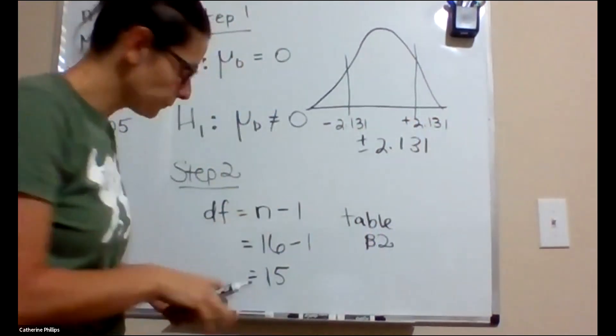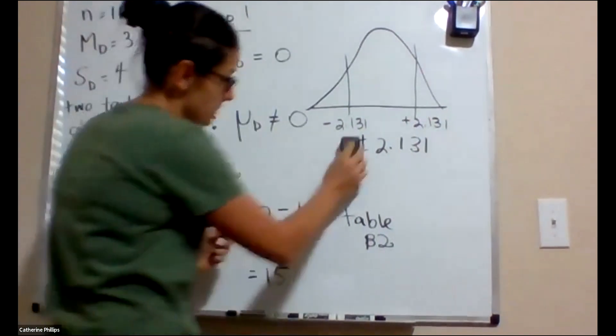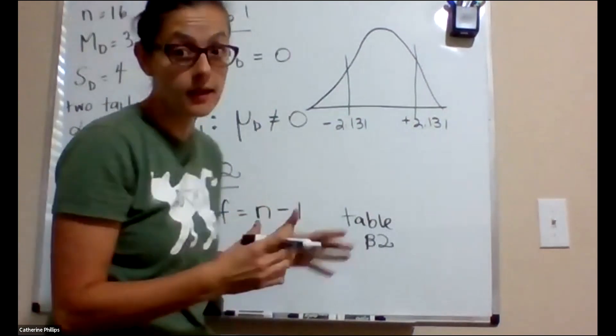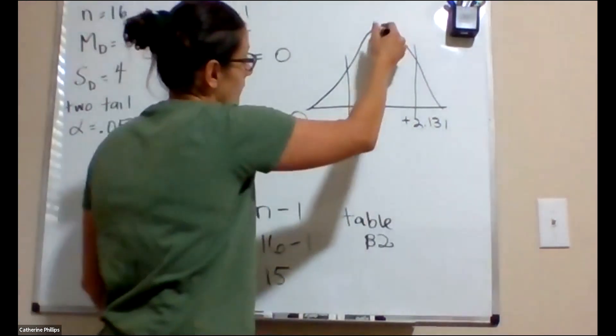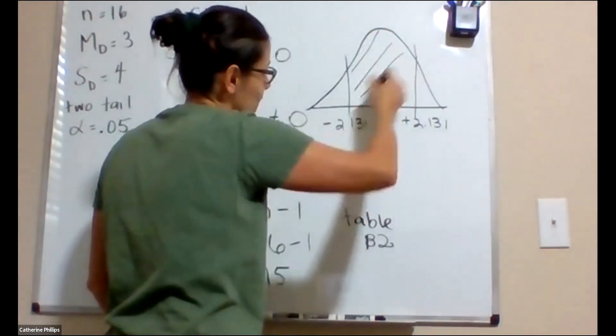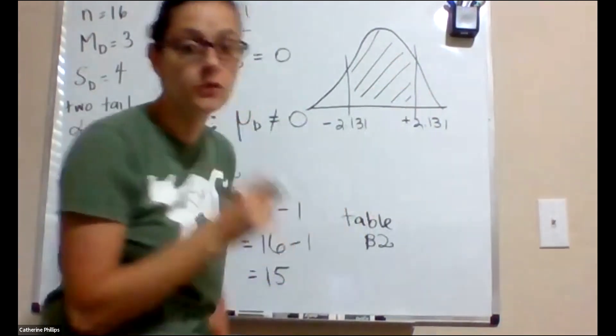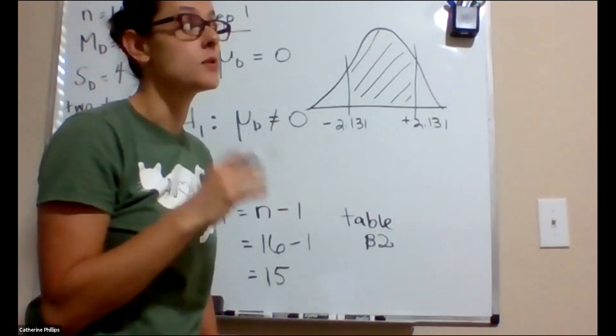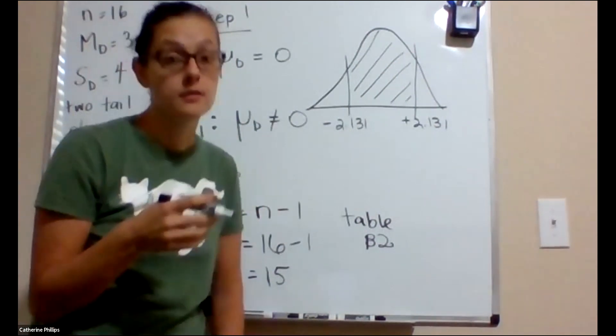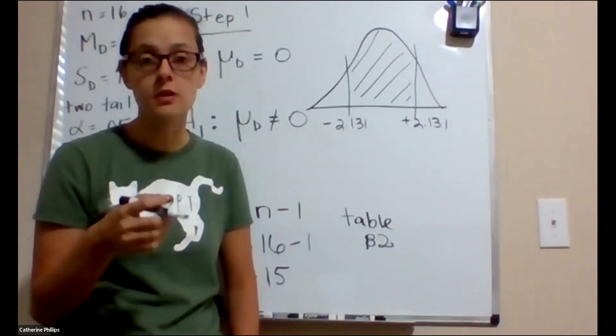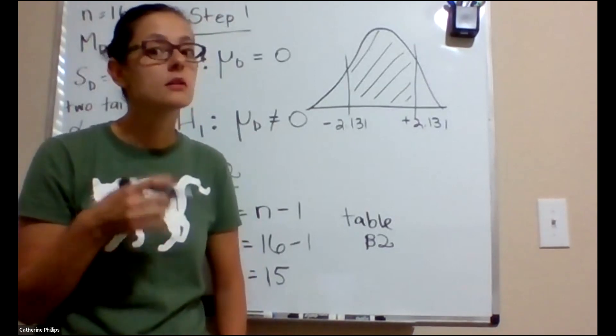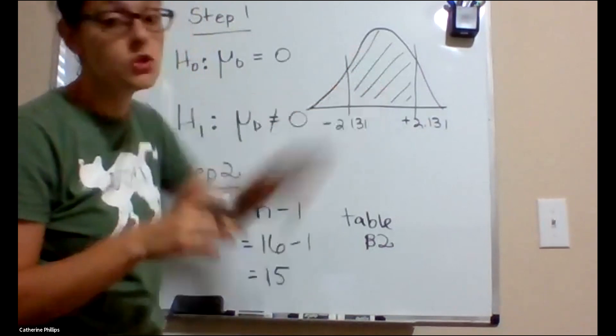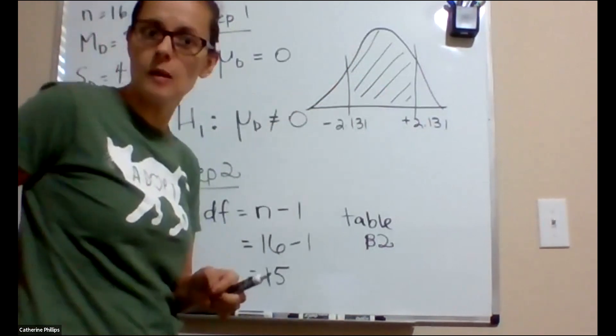When we calculate our t-test in step three, if we get a score that falls in here, we're going to fail to reject the null hypothesis. The result that we got, the difference that we measured, is not more than what we would expect by chance. There's no significant difference if it falls in the middle.